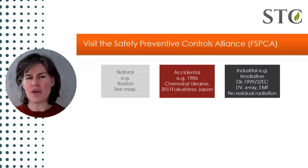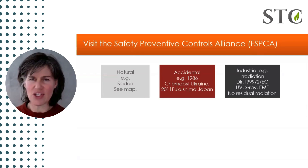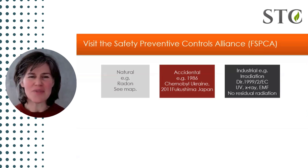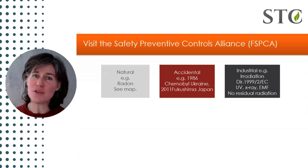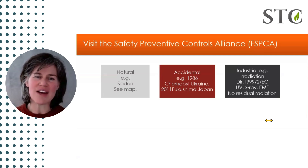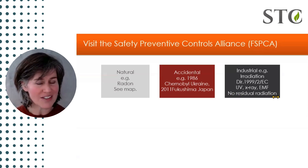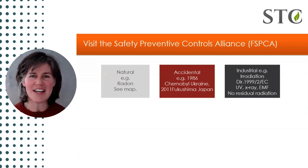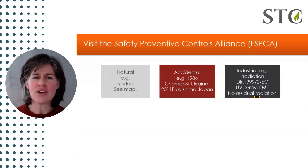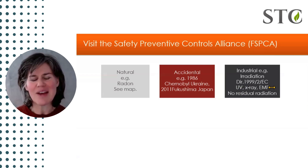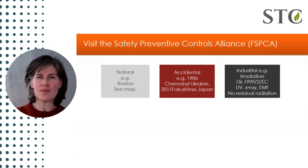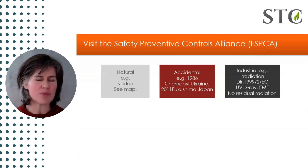We have industrial sources of radiation, which are by design used on purpose in industry. Irradiation is a process to sterilize things like dental tools and some foods in some parts of the world. Europe and the UK doesn't like to have food irradiated by choice, even though it actually leaves no residual radiation in the food product. Other sources used in industry include UV, X-ray, and electromagnetic frequencies or EMF that you get from your computer monitor, laptop, and mobile phone.